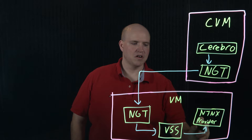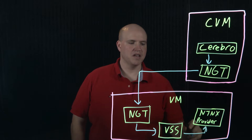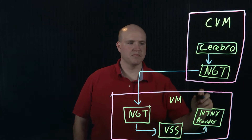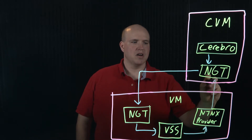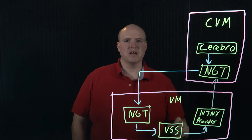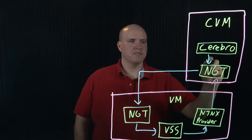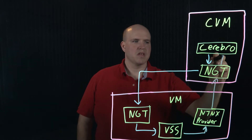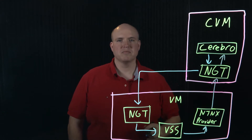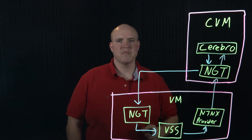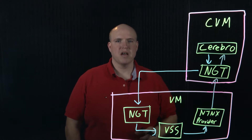VSS will talk to the Nutanix provider in the virtual machine, which will talk to NGT running in the CVM, which will talk to Cerebro. At this point, Cerebro will take the snapshot. And then the reverse will happen.